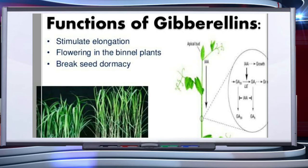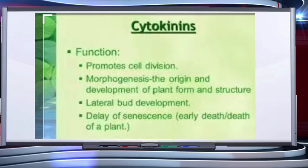This slide shows the functions of gibberellins. The sites of gibberellin production in plants are roots, embryo, and young leaves near the shoot tip. Gibberellins stimulate stem elongation and leaf expansion. Cell division and cell elongation induced by gibberellic acid cause stem elongation. They also cause elongation of genetically dwarf varieties of plants such as corn.